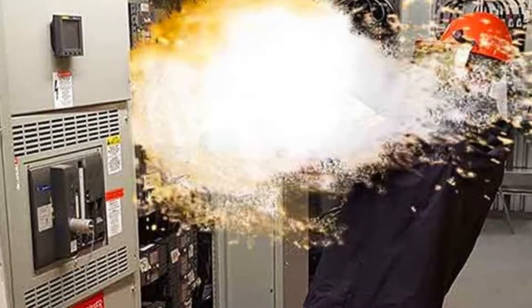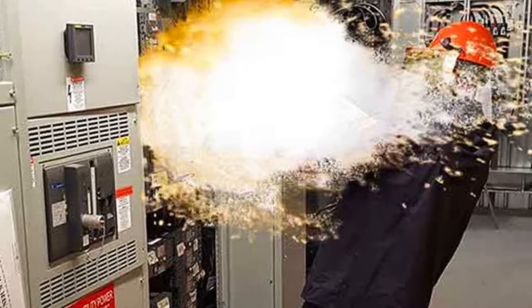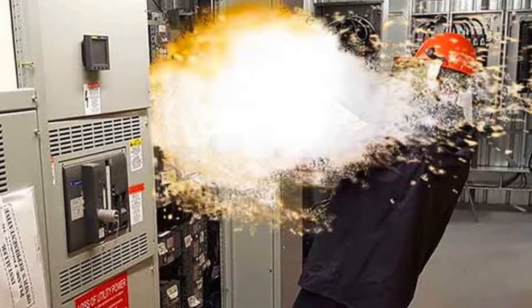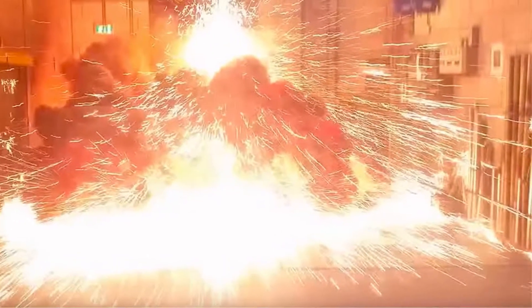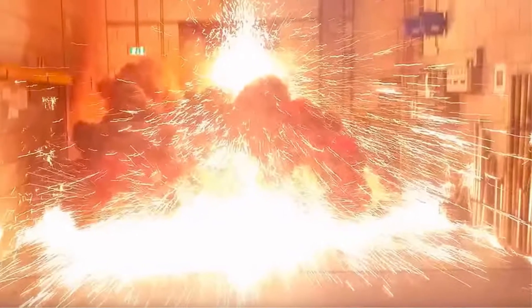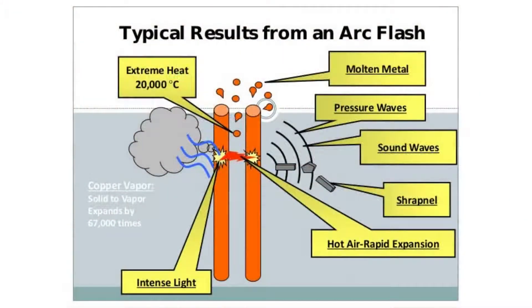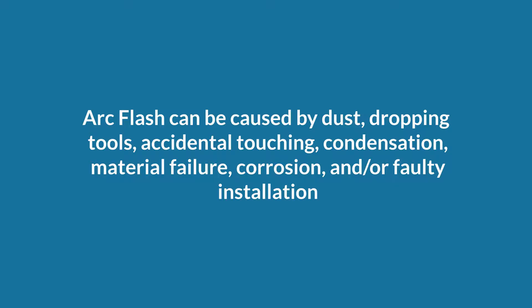Electrical arc flash is a phenomenon where a flashover of electric current leaves its intended path and travels through the air from one conductor to another or to the ground. Arc flash occurs when several electrical conductors are placed close to each other with significant fault currents flowing through them. In this situation, ionization of the air can take place, which leads to a low-resistance path and allows current to flow through the air gap between conductors.